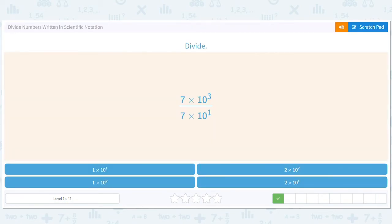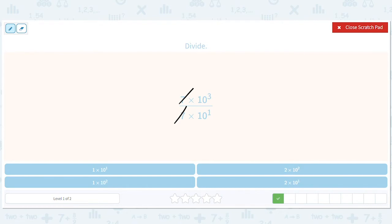Okay, again, we're going to cross out these sevens. We're going to get 3 minus 1 is 2, so we're going to get 10 to the second. And again, our answer is going to be 1 times 10 to the second.